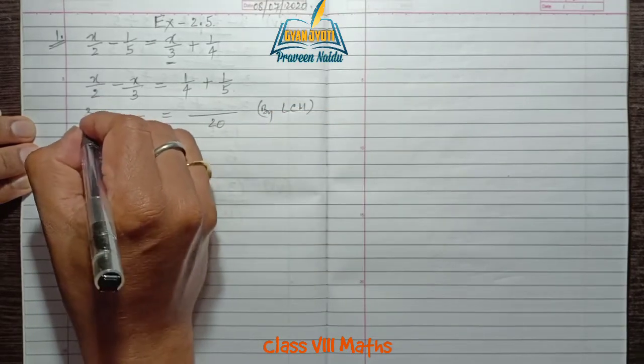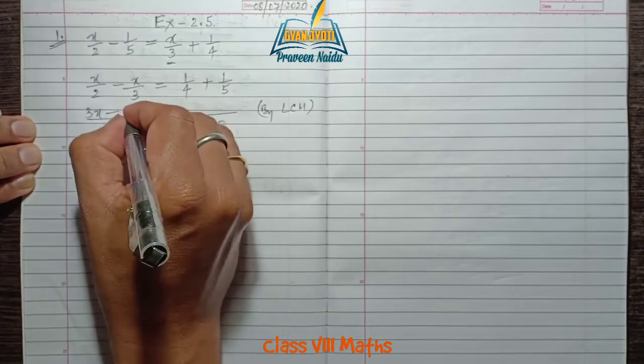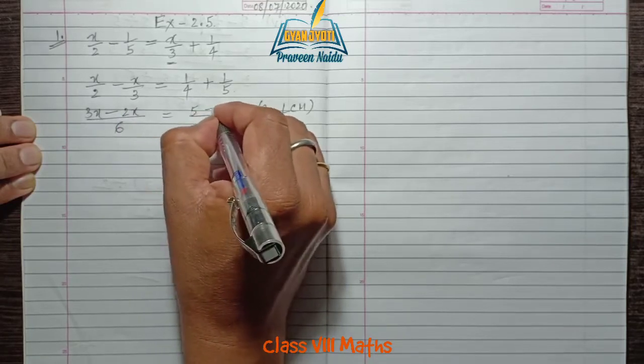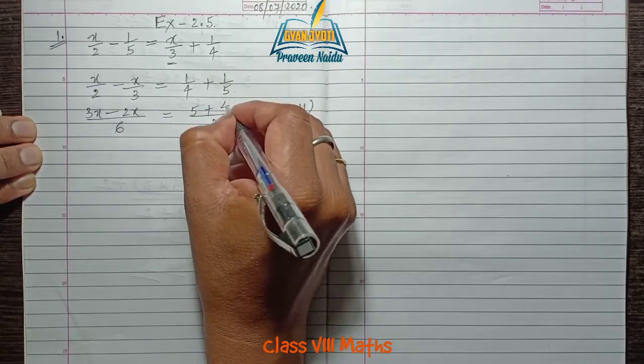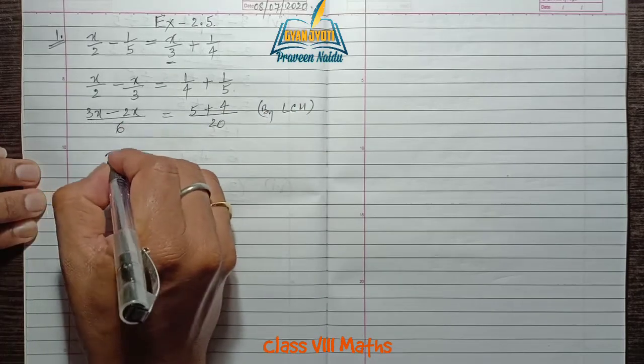By dividing and multiplying, you have 3x - 2x on the left. On the right side, it is (5 + 4)/20.